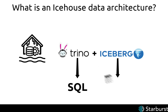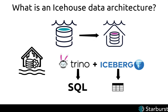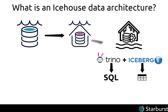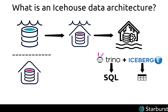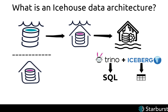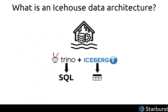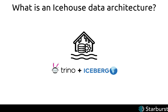It's this union — Trino plus Iceberg — that creates the ice house: an architecture that's open at every level. Trino is an open source SQL-based query engine, and Iceberg is an open source table format. If the data lake house is the next era of the data lake, the ice house is the next era of the data lake house. With an ice house implementation, you no longer need to choose between a costly data warehouse and an inexpensive but underperforming data lake. The language of the ice house is SQL, and it is able to perform data transactions and operations more easily than other methods.